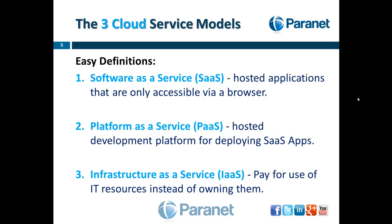And then third is infrastructure as a service. This is when you pay for the use of the resources instead of actually owning them. So instead of buying a server and storage and using that for five years, you can contract with Amazon, for example, and just ask for the computing power you need for the next six months and pay for what you use.